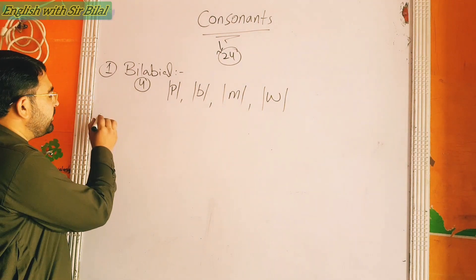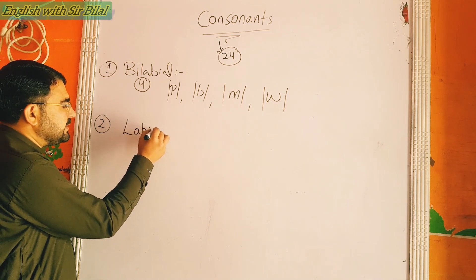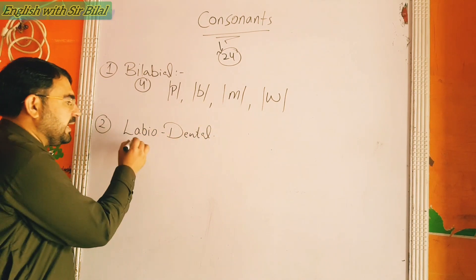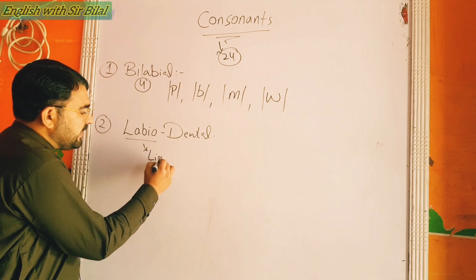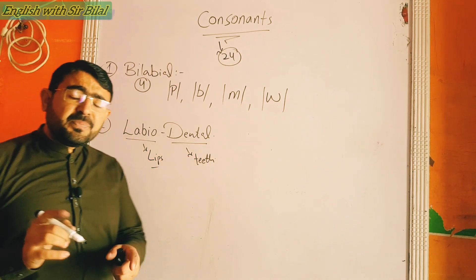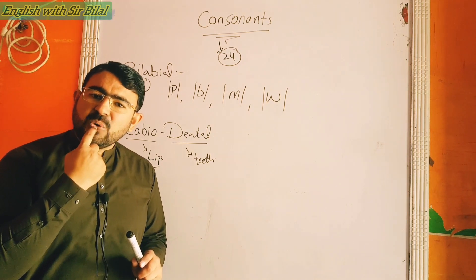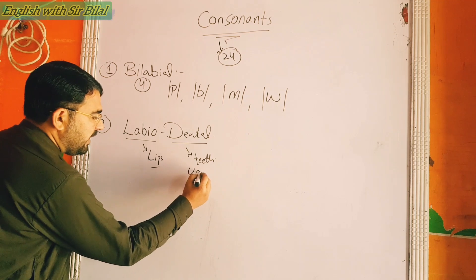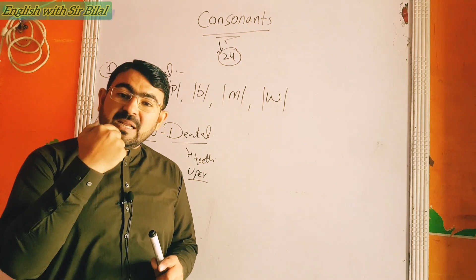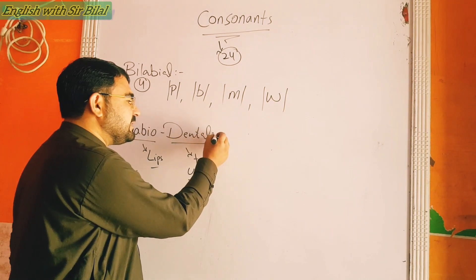Now let's start the new group. Group number two: the labio-dental group. 'Labio' means lips and 'dental' means teeth. Those sounds which we produce with the help of upper teeth and lower lips — those sounds are called labio-dental.